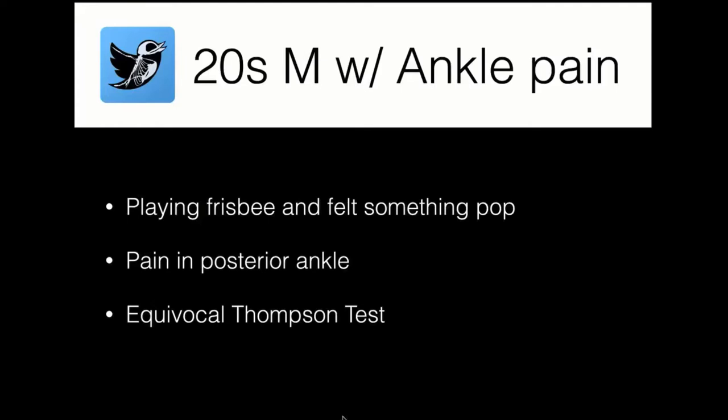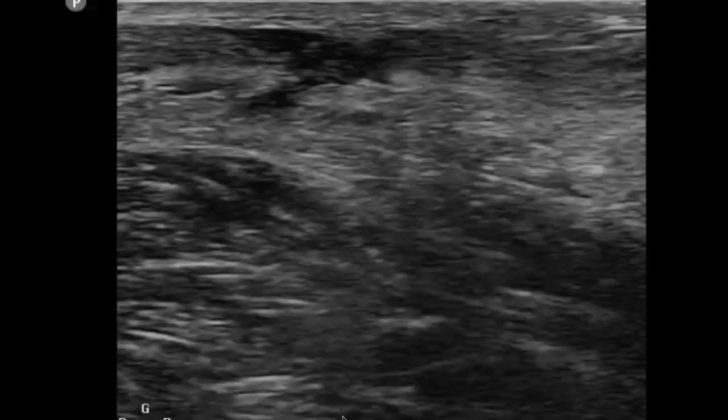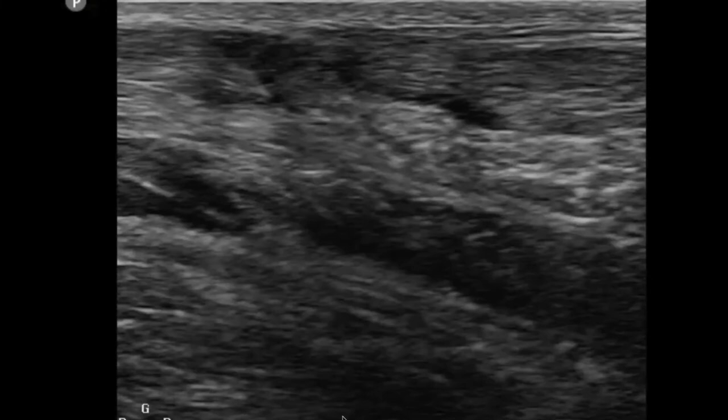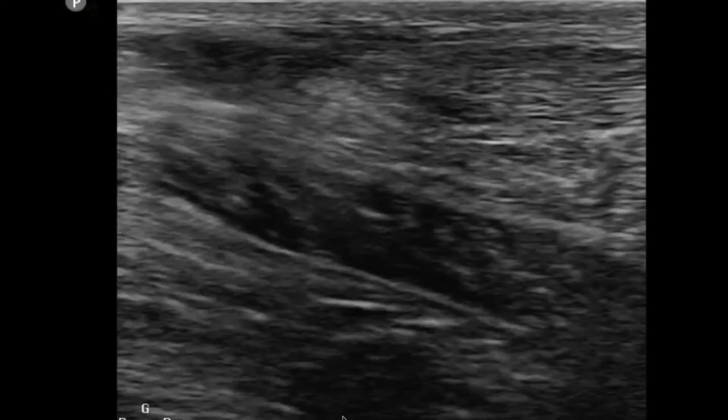In the remainder of our time, we'll talk through some cases and how to apply that information at the bedside. First case: a 20-year-old with ankle pain who was playing Frisbee, felt something pop, and now has pain in the posterior ankle. The Thompson test is equivocal. This one is clinically self-evident — it screams an Achilles tendon injury. But when you put the probe on the patient, it illustrates what we suspect, and sometimes the story is not as clear.